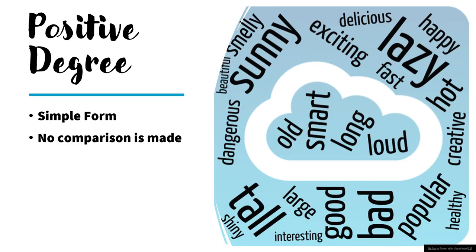First, positive degree. Positive degree is the simple form of adjectives. If you look at the list here: beautiful, smelly, sunny, dangerous, tall, shiny, large, interesting, good, bad, popular, healthy, creative, hot, lazy, happy, fast, delicious, exciting, old, smart, long, loud. These are all simple forms — no comparison is made.